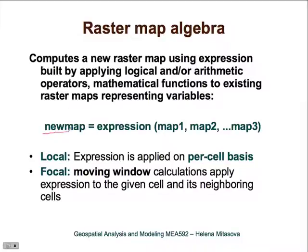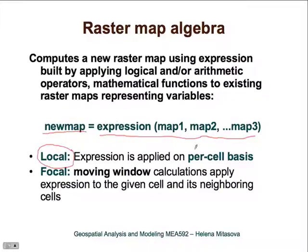The resulting map is computed as a function of different raster maps. The operation is local, meaning that the function is applied on a per-cell basis — it is applied for each corresponding cell independently.